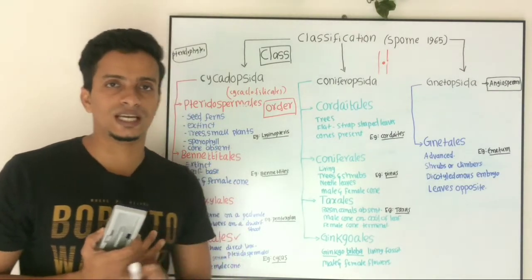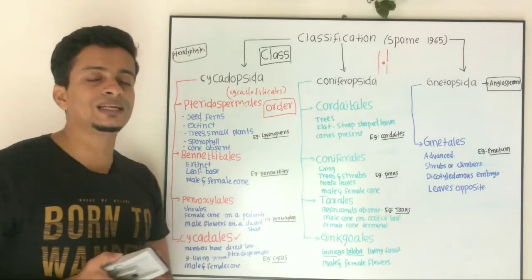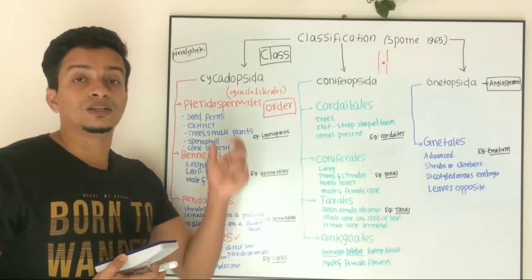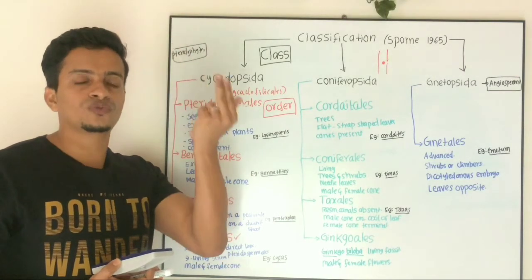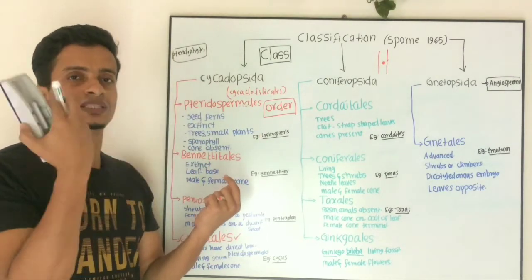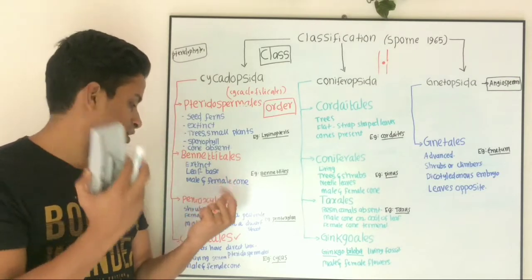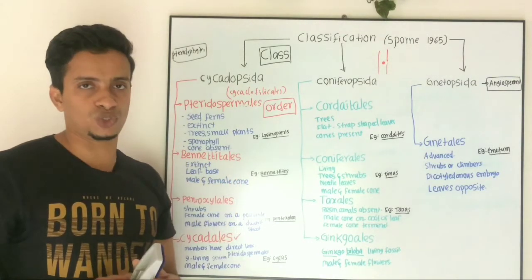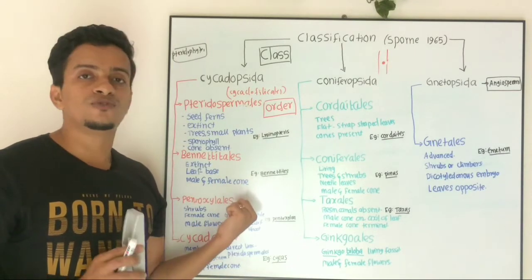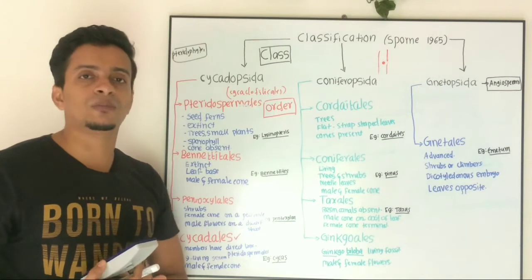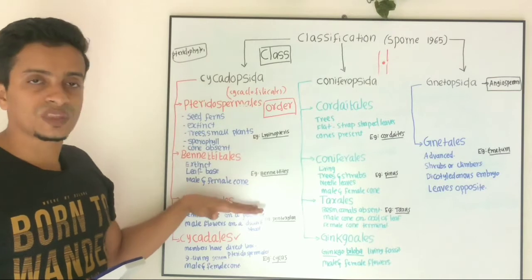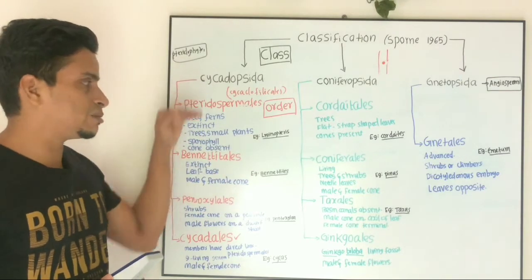The third category is Pendocylates. Pendocylates are small shrubs. The female cone is borne on a peduncle — the axis of the inflorescence is known as a peduncle. Female cones are arranged on the peduncle, while male flowers are on a dwarf shoot. Under Cycadopsida, these three orders are all extinct members.